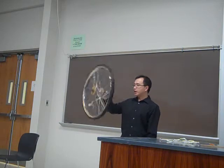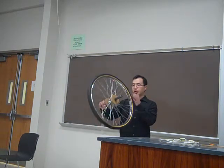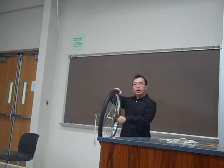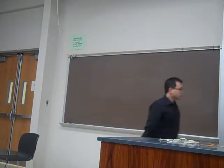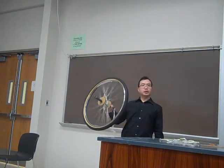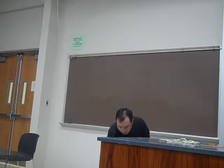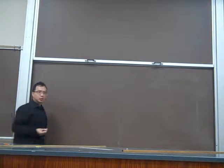So we try to understand why we have this kind of situation. The phenomenon is that without the rotation, it will drop. But with the rotation, the wheel can stay and rotate like that. This is related to the existence of angular momentum. After I rotate the wheel, it will have some angular momentum. Now we can understand why it happens. Let's first think about the linear motion.